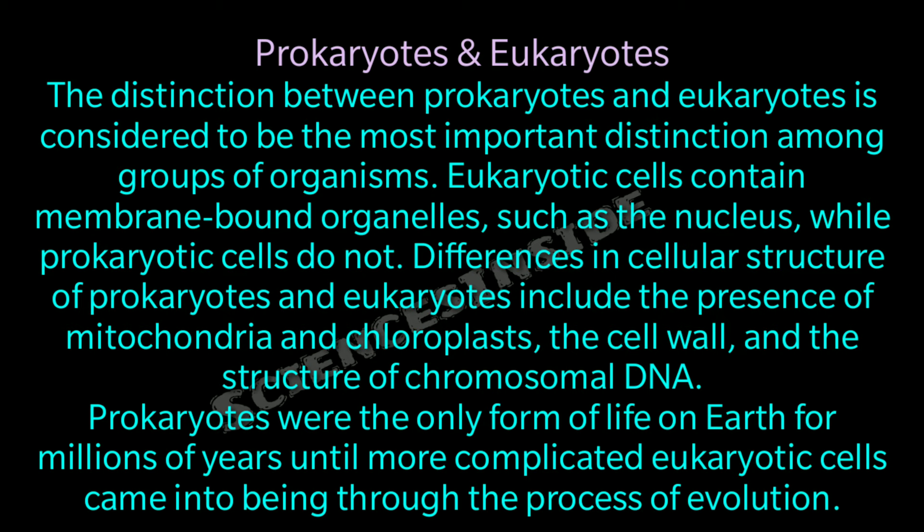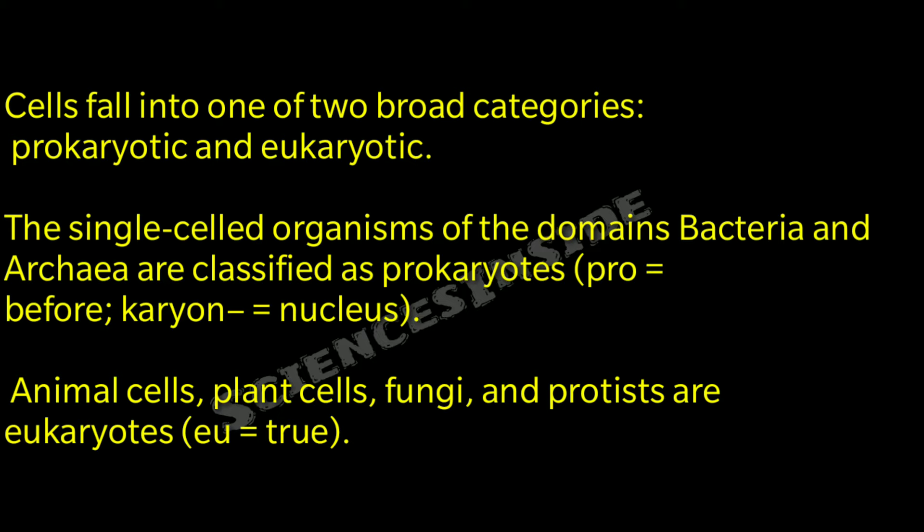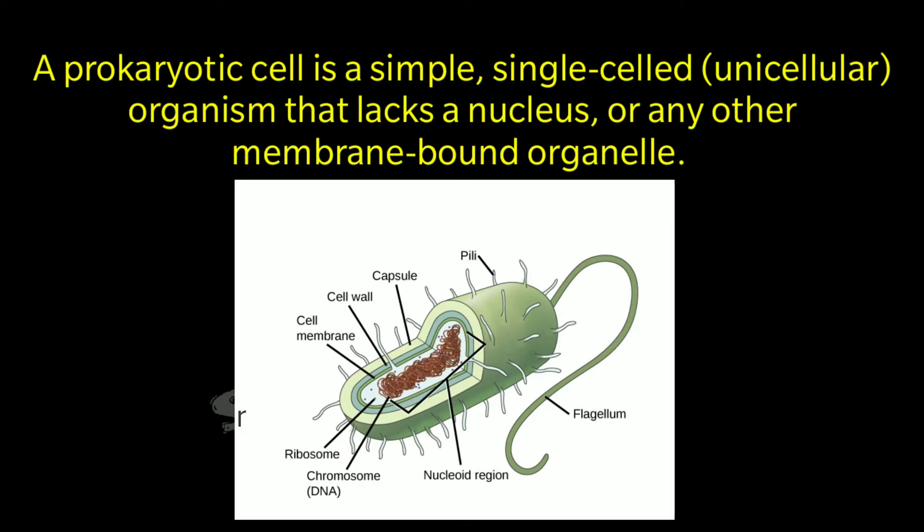Cells fall into one of two broad categories: prokaryotic and eukaryotic. Single-celled organisms of the domain Bacteria and Archaea are classified as prokaryotes — the word 'prokaryote' means 'before nucleus.' Animal cells, plant cells, fungi, and protists are eukaryotes — 'eu' means true. A prokaryotic cell is a simple, single-celled (unicellular) organism that lacks a nucleus or any other membrane-bound organelle.